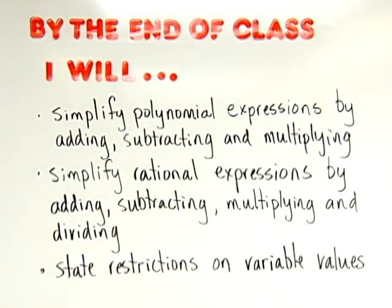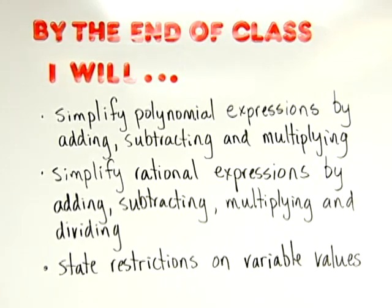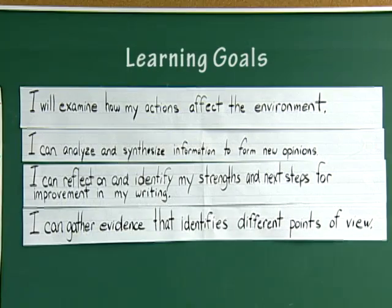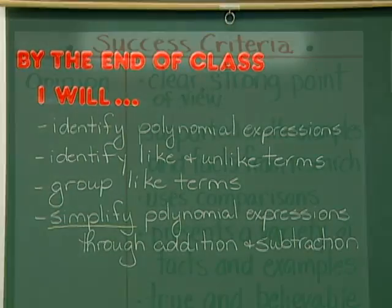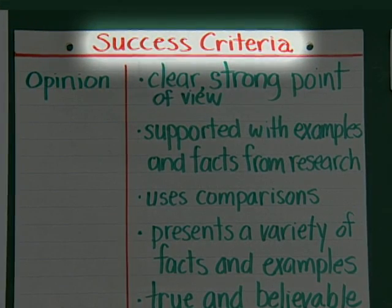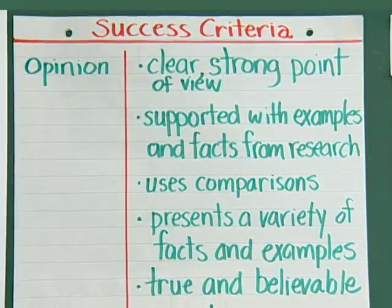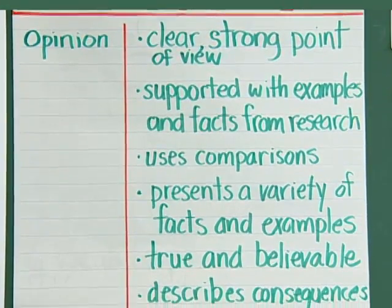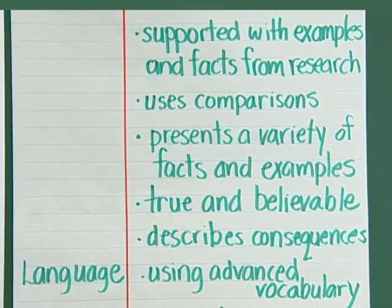Learning goals describe, in student-friendly language, what students are to know and be able to do by the end of a period of learning. Success criteria describe, in specific terms, what successful attainment of the learning goal looks like.